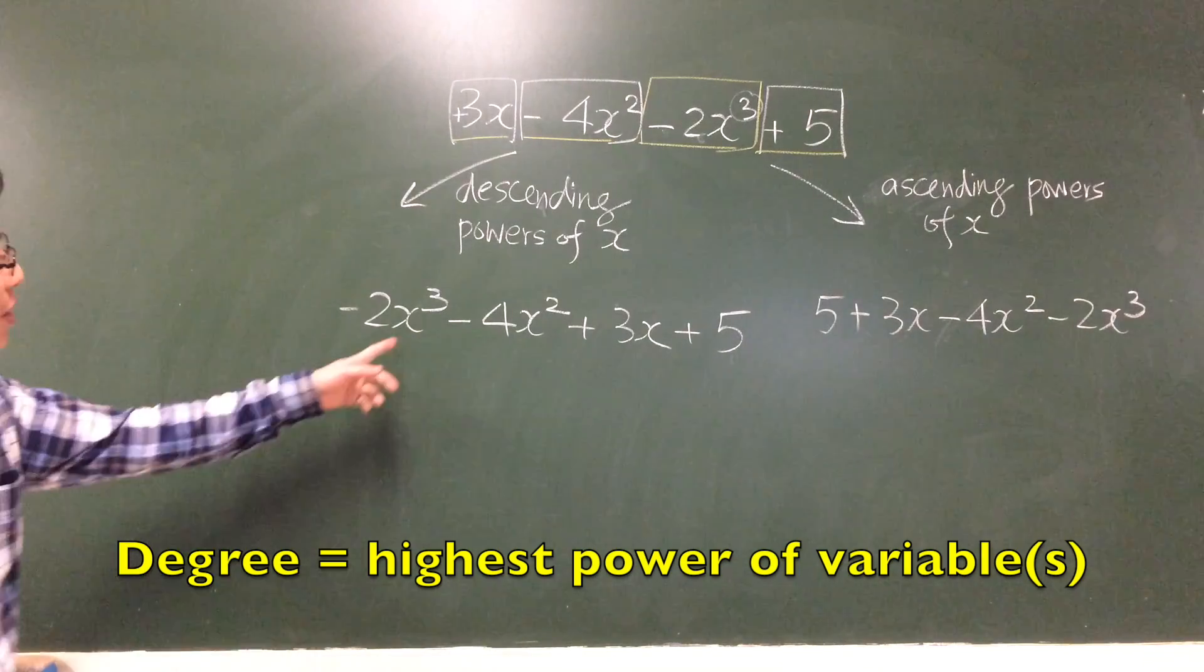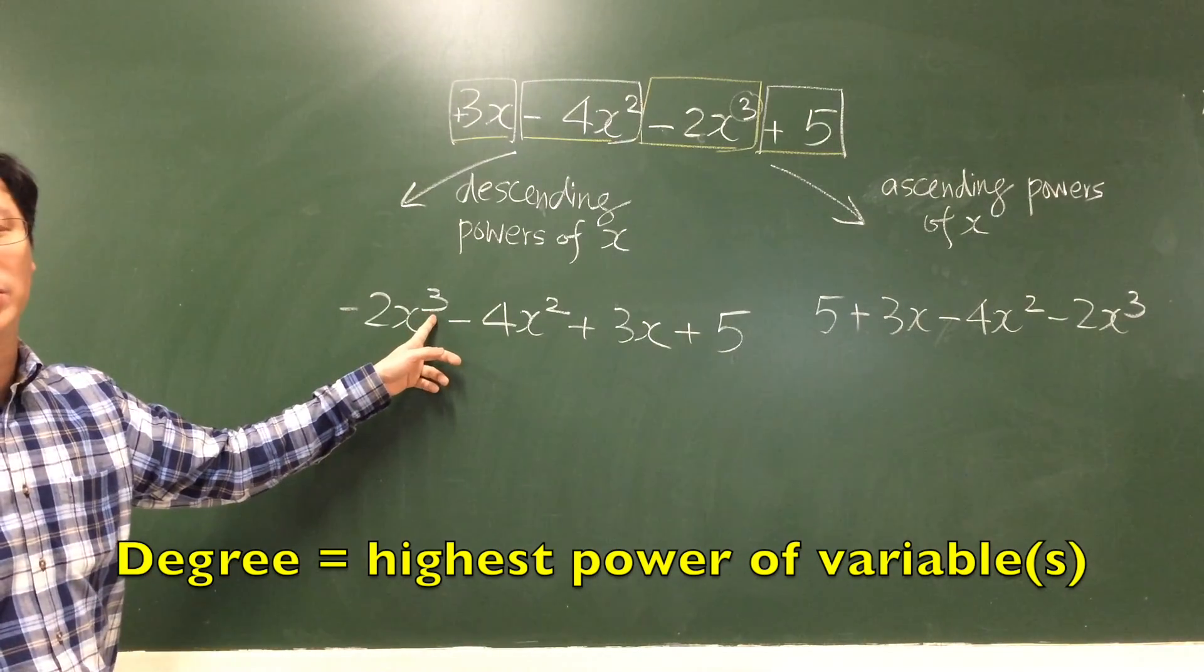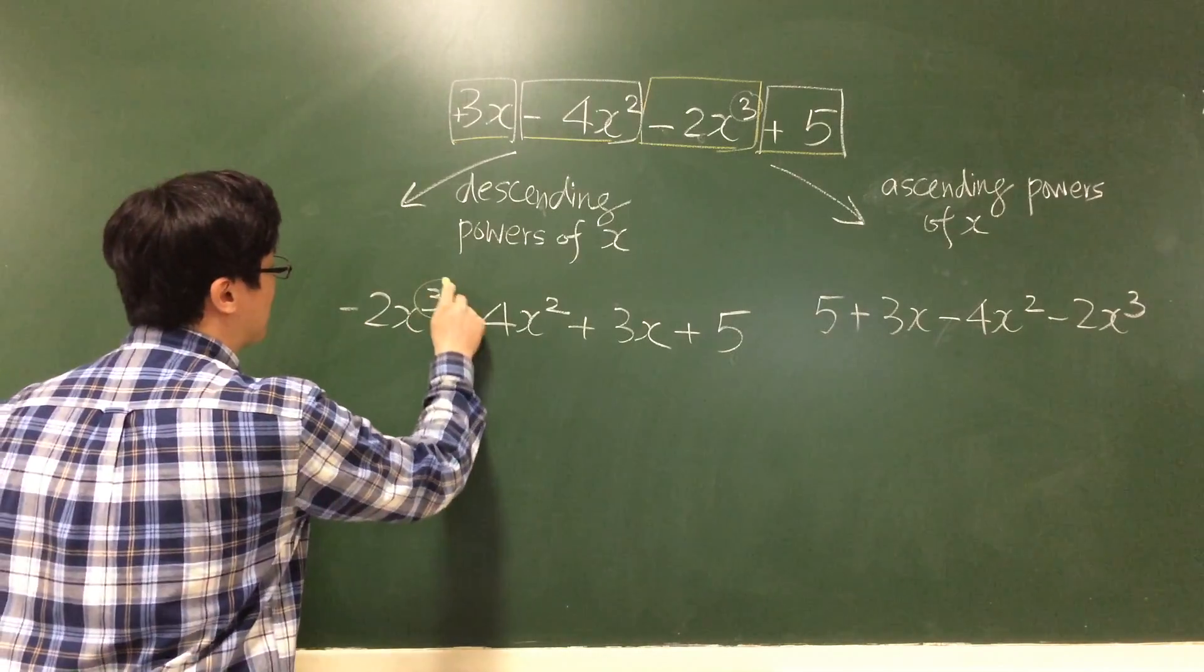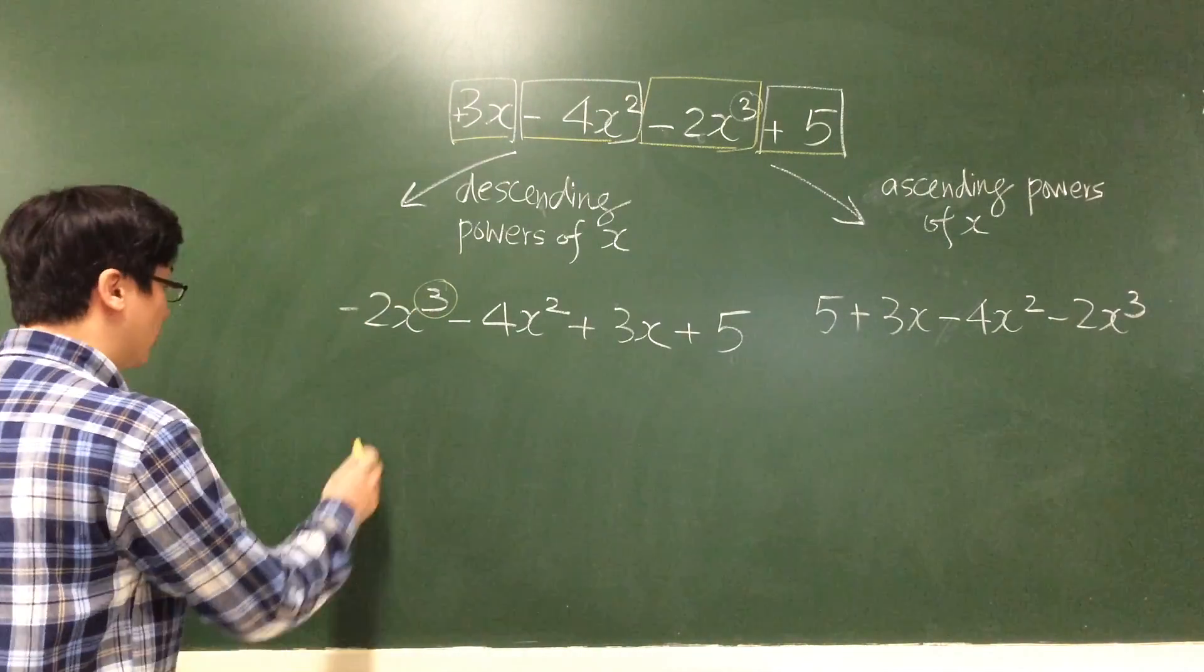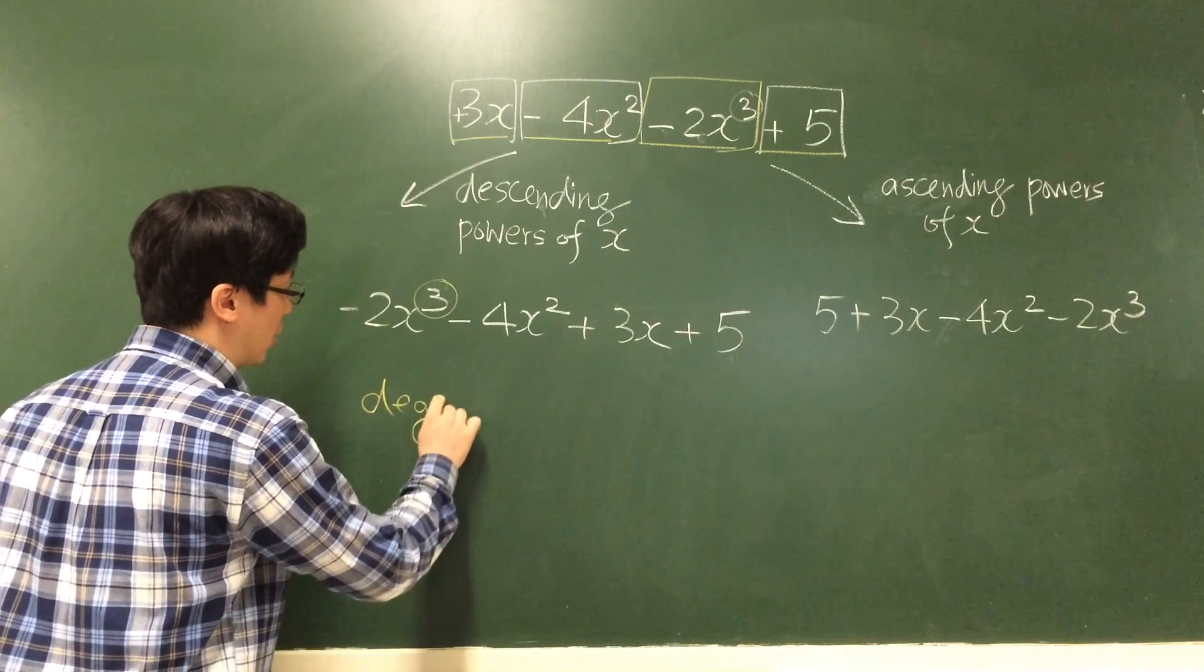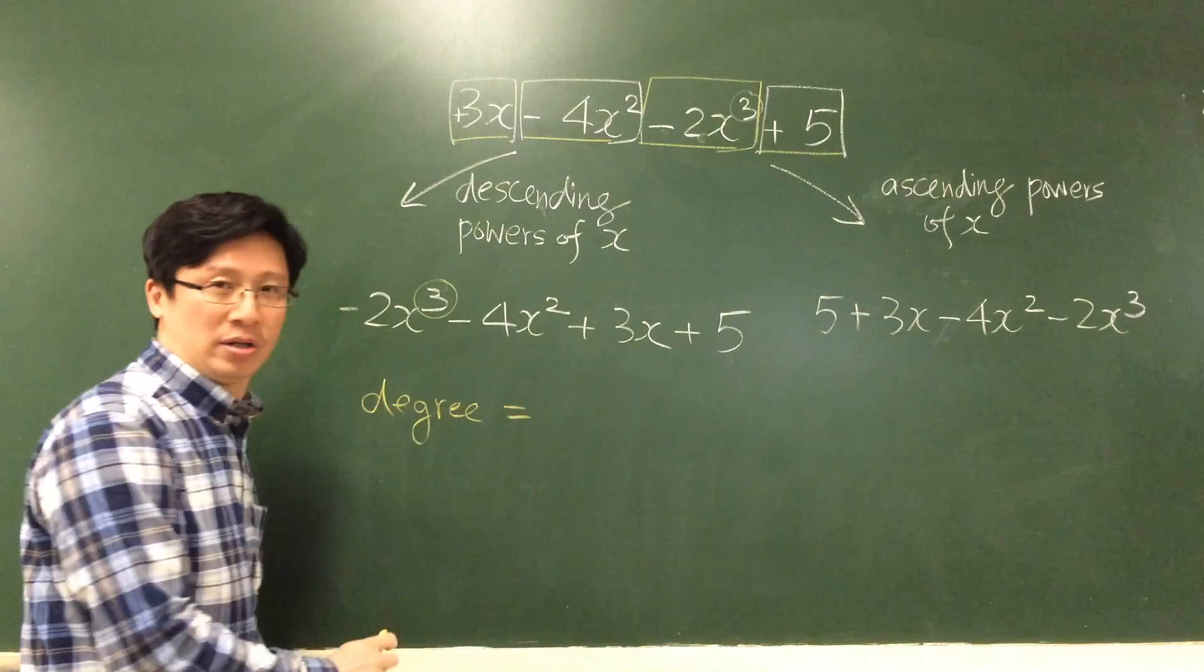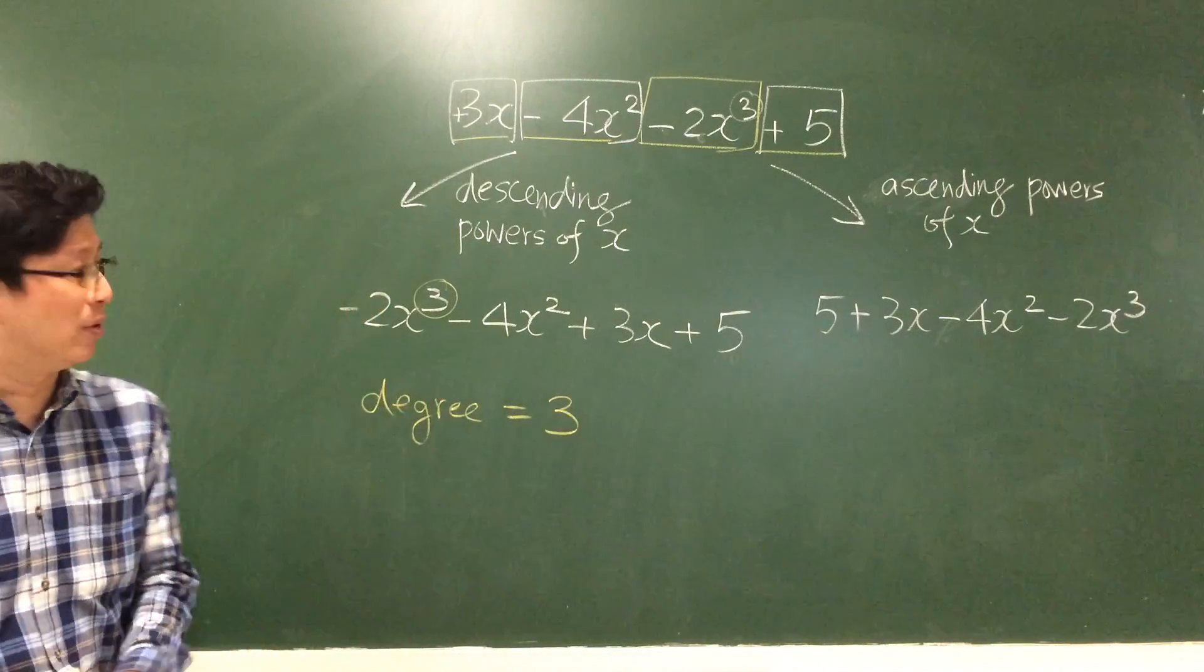The rule is we look at the term with the biggest power. The highest power is 3 because we have the term x cubed, so the degree of this expression is 3. We just count the highest power.